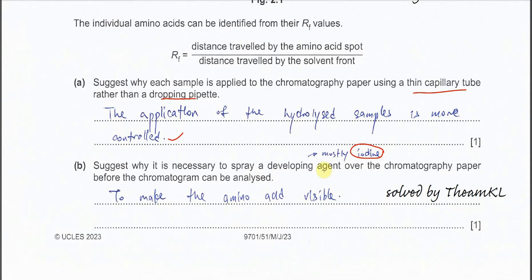We just spray some iodine on the paper, so it will be colored, means it's just to make the amino acid visible. Normally amino acid, some of that, most of that is invisible. So we need something to let it be visible. So now we will spray some iodine or the developing agent.